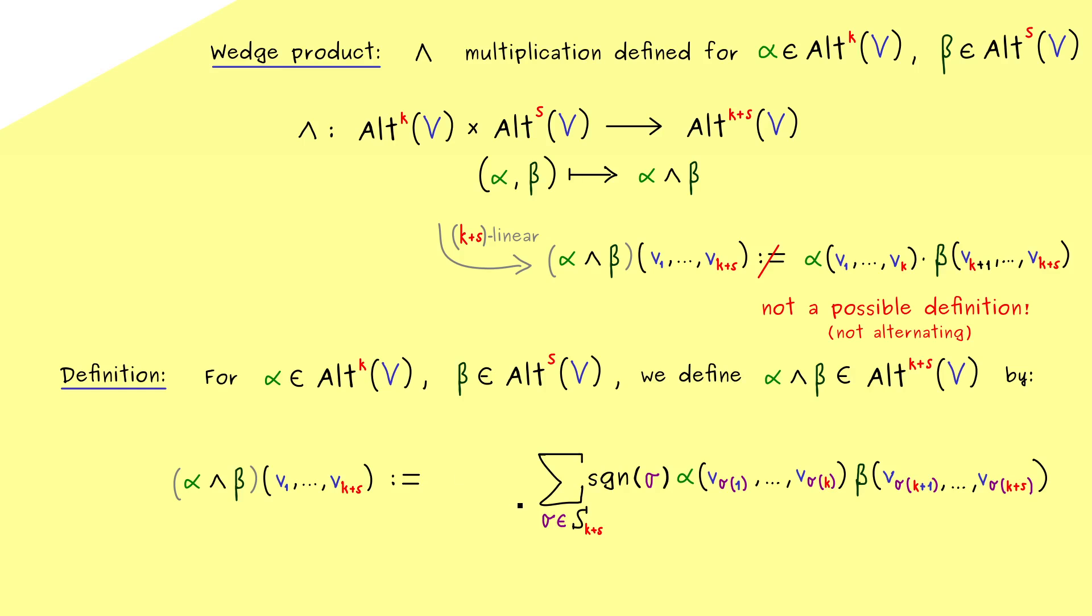However, in this case here, we want to add a little detail, because with these permutations we do more than we need. In fact, a lot of parts of the sum are repeated, simply because, for example, a permutation that only changes something inside alpha here will not change the overall value of the part of the sum.